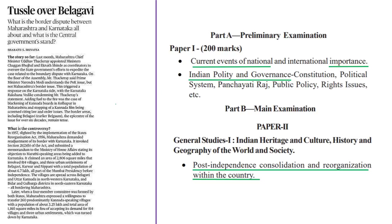The next news article is about the border dispute between Maharashtra and Karnataka. Recently, the Chief Minister of Maharashtra appointed two ministers as coordinators to oversee the state government's efforts to expedite the case related to the border dispute with Karnataka — a case that Maharashtra has filed in the Supreme Court.